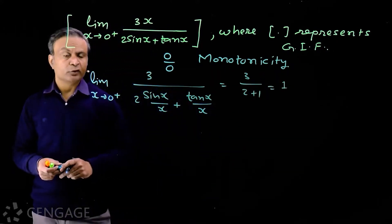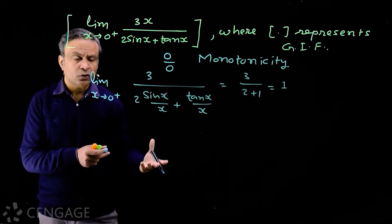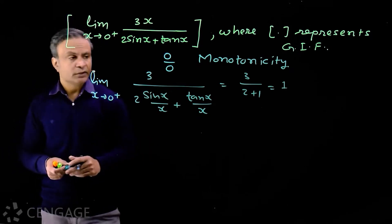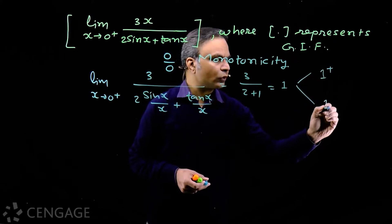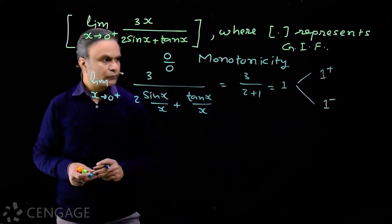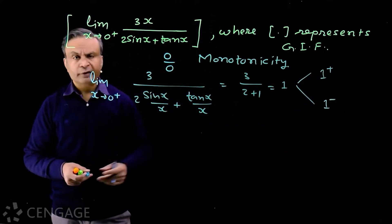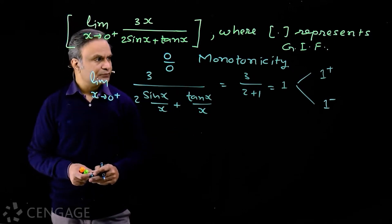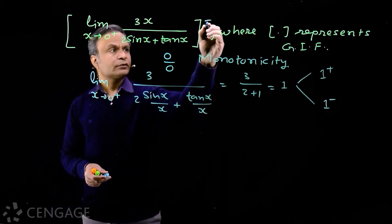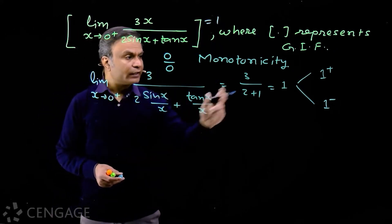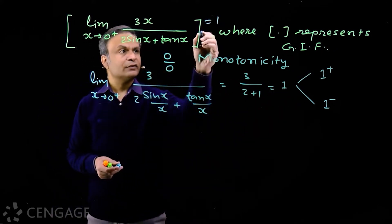Now we know that this value is not exactly 1. This value may be slightly more than 1 or slightly less than 1. This value may be 1+ or 1-. If this value is 1+, this will be 1, and if this value is 1-, this value will be 0.